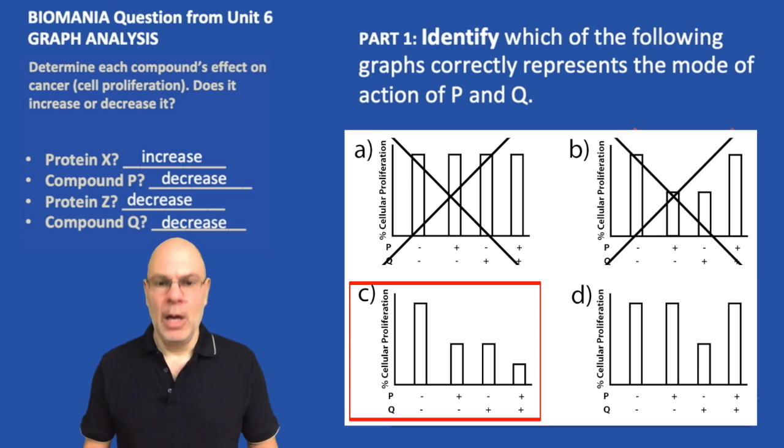Now let's look at C. Leftmost bar is the control. The second bar is showing when P is present, Q is absent, cell proliferation goes down. The third bar shows when Q is present, P is absent, cell proliferation goes down. And finally, the rightmost bar shows when both of them are together, present, cellular proliferation goes down the most. That looks like it's the winner. That one makes sense.